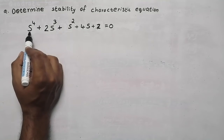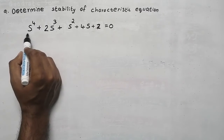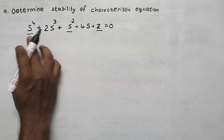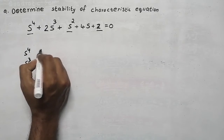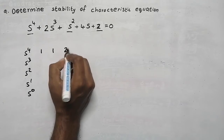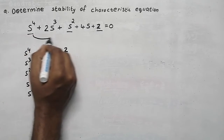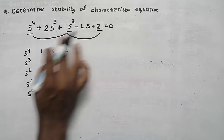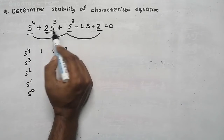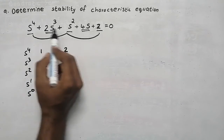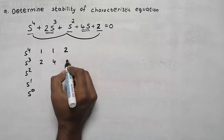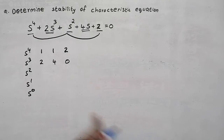Now take the first element, then after a gap the next element — take alternate elements as coefficients. The coefficient of s⁴ is 1, the coefficient of s² is 1, and the last number is 2. For the second row, take the coefficient of s³ which is 2, the coefficient of s¹ which is 4, and then 0 since there is no further element.